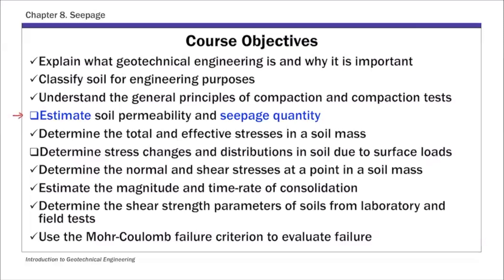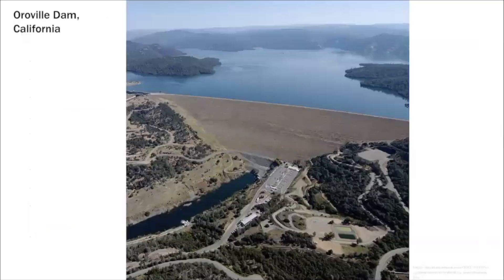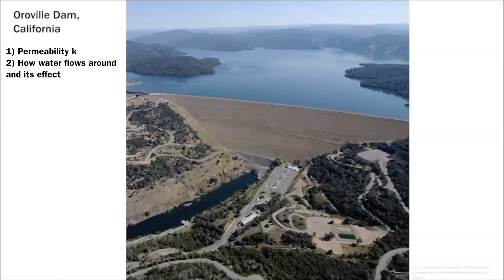For seepage, basically it refers to water flow through soil, and this is important for many geotechnical engineering applications. This picture is Oroville Dam in California — the tallest dam in the United States, sitting at 770 feet. To design this hydraulic structure, you need knowledge of hydraulic conductivity or permeability of soil, something we discussed in Chapter 7. You also need to understand how water flows beneath or around this hydraulic structure, and the quantity of water flow. What we learn in this chapter will help answer these questions.